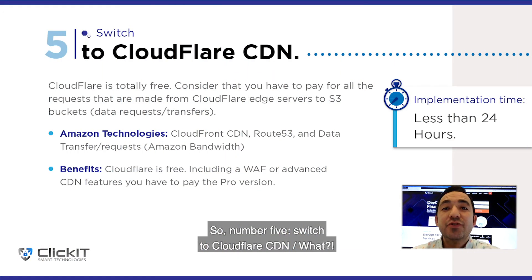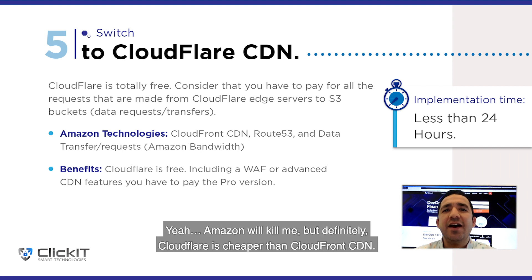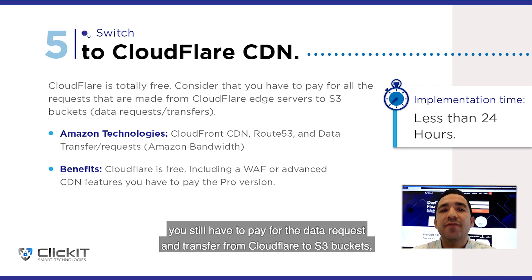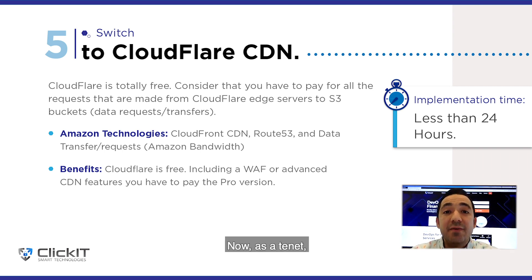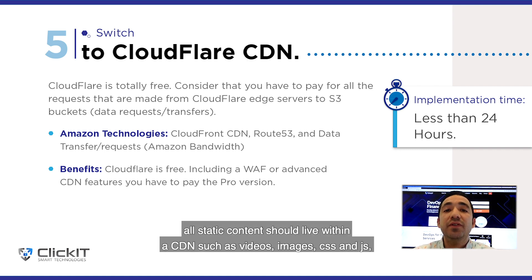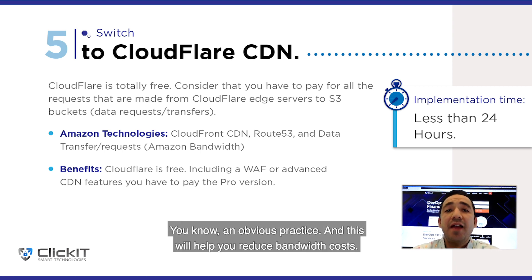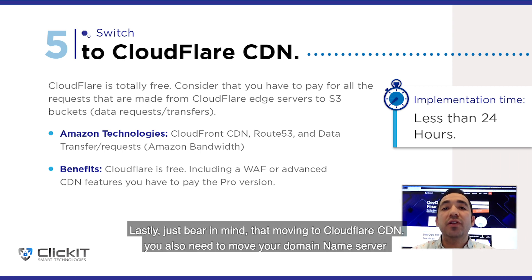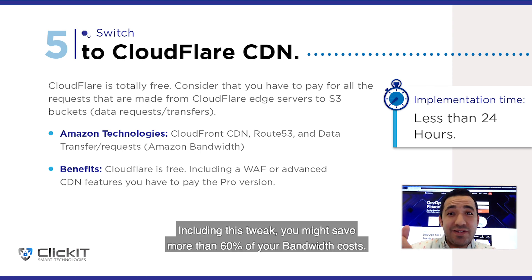Number 5: Switch to CloudFront CDN. Amazon might not love me for this, but CloudFront CDN is definitely cheaper than serving content directly. You still have to pay for data requests and transfers from CloudFront to your S3 bucket, but just that. All static content should live within a CDN — such as videos, images, CSS, and JS — which helps reduce bandwidth costs. Just bear in mind that moving to CloudFront CDN, you also need to move your domain name server or registrar to CloudFront. Including this tweak, you might save more than 60% of your bandwidth costs.